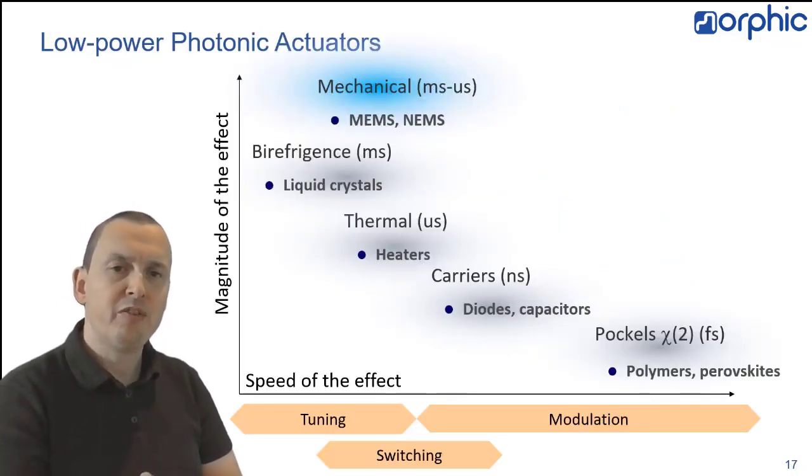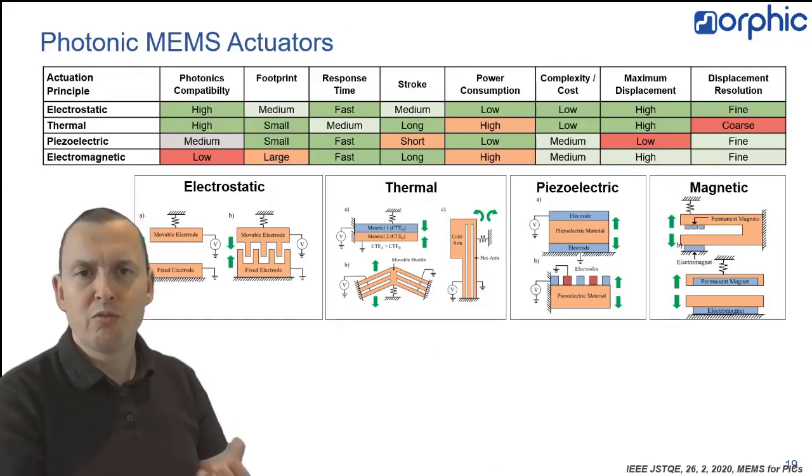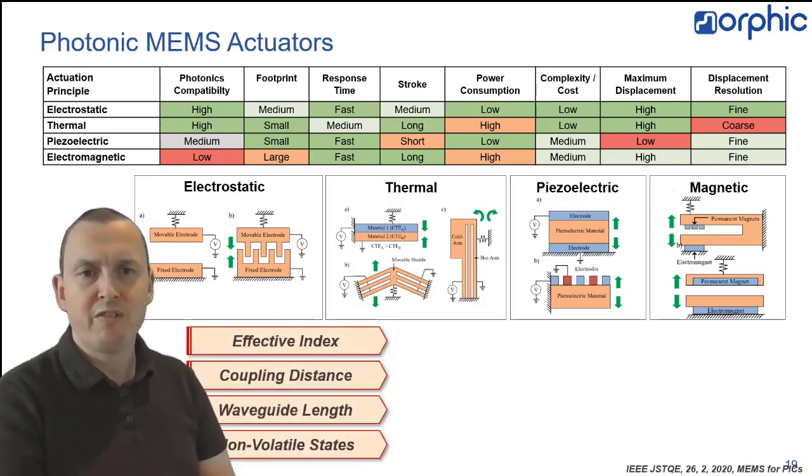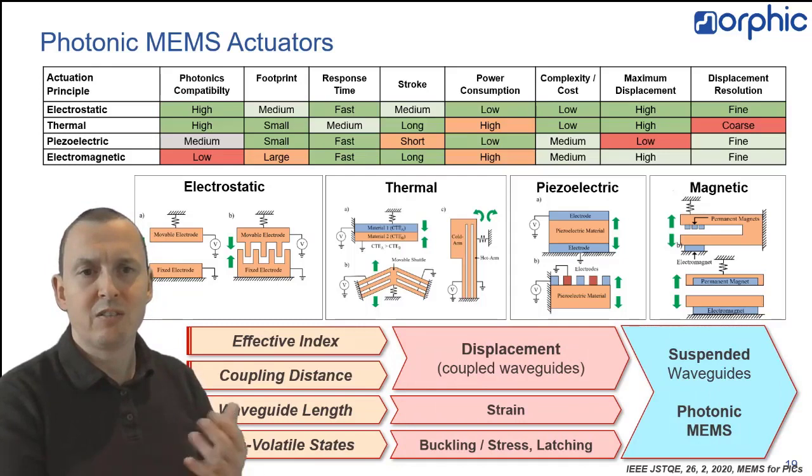So, what we're doing in Morphic is look into mechanical systems. We're trying to bring in micro-electromechanical MEMS. Now, mechanical tuning is quite effective. You have different ways to move material around in silicon, either with electrostatic or thermal or piezoelectric or magnetic effect, which essentially allows you to change the effective index of the waveguide, to change the coupling distance, to change the waveguide length, or even, in cases where you use mechanical bistability or latching, non-volatile states. And by bringing this together, by manipulating displacement, strain, and buckling, we can end up with suspended waveguides and photonic MEMS.